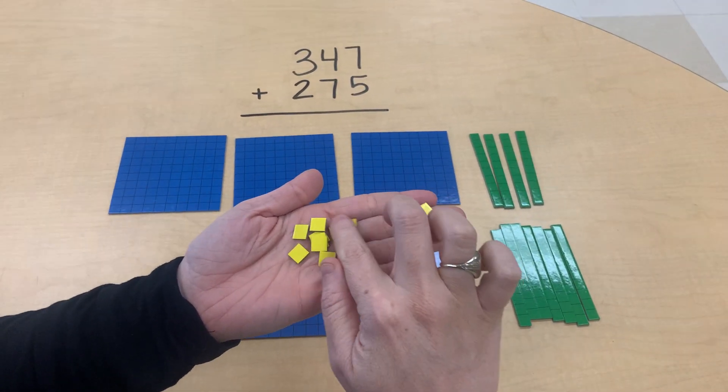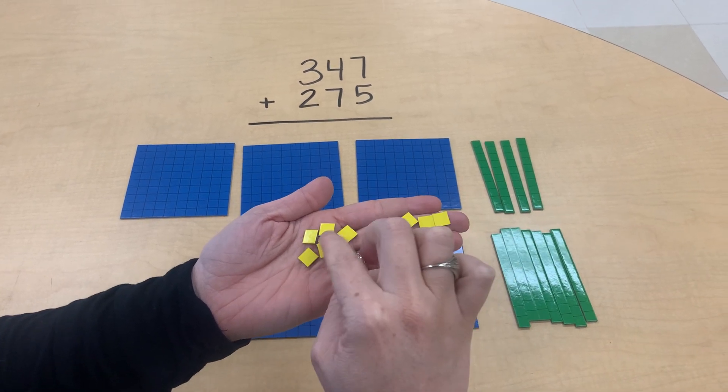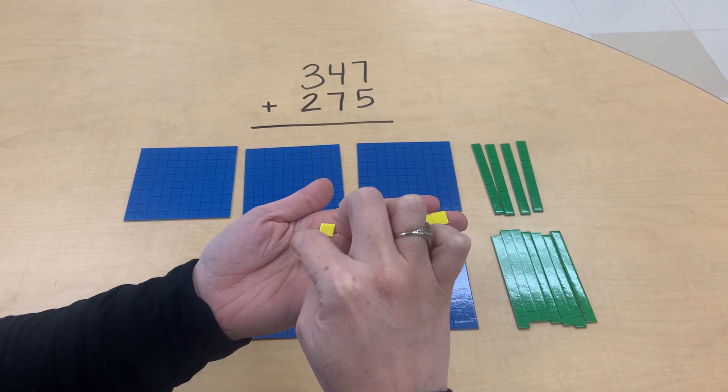Seven plus five is going to be twelve ones. One, two, three, four, five, six, seven, eight, nine, ten, eleven, twelve.